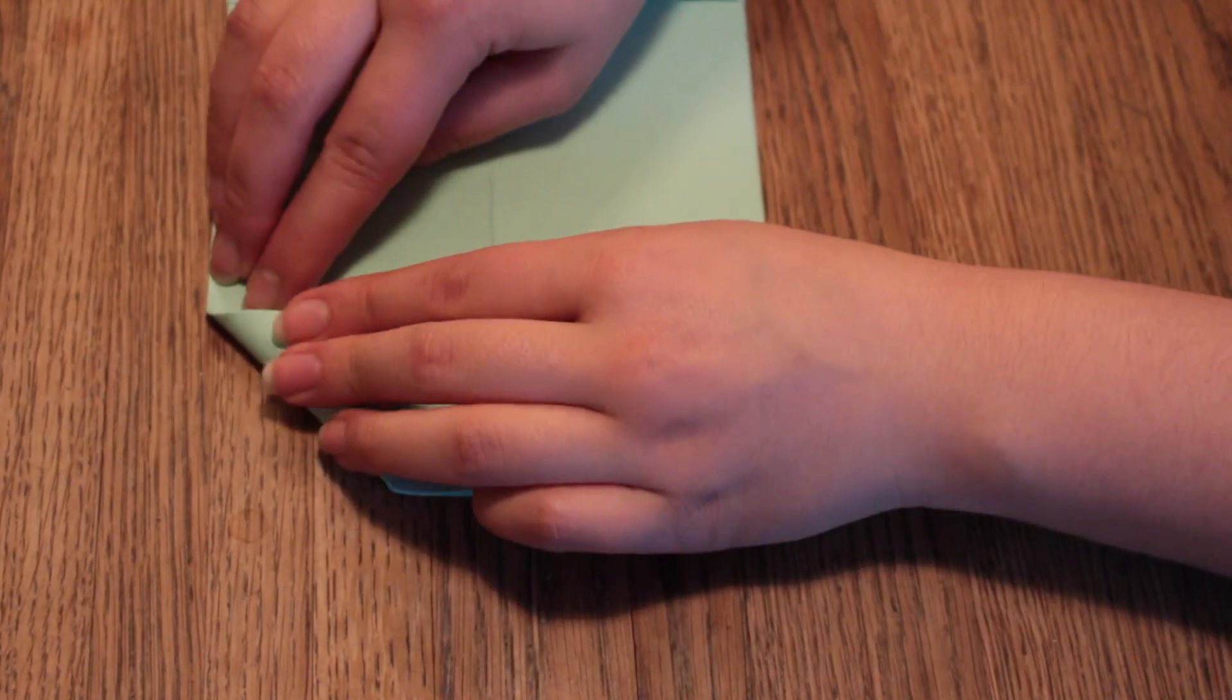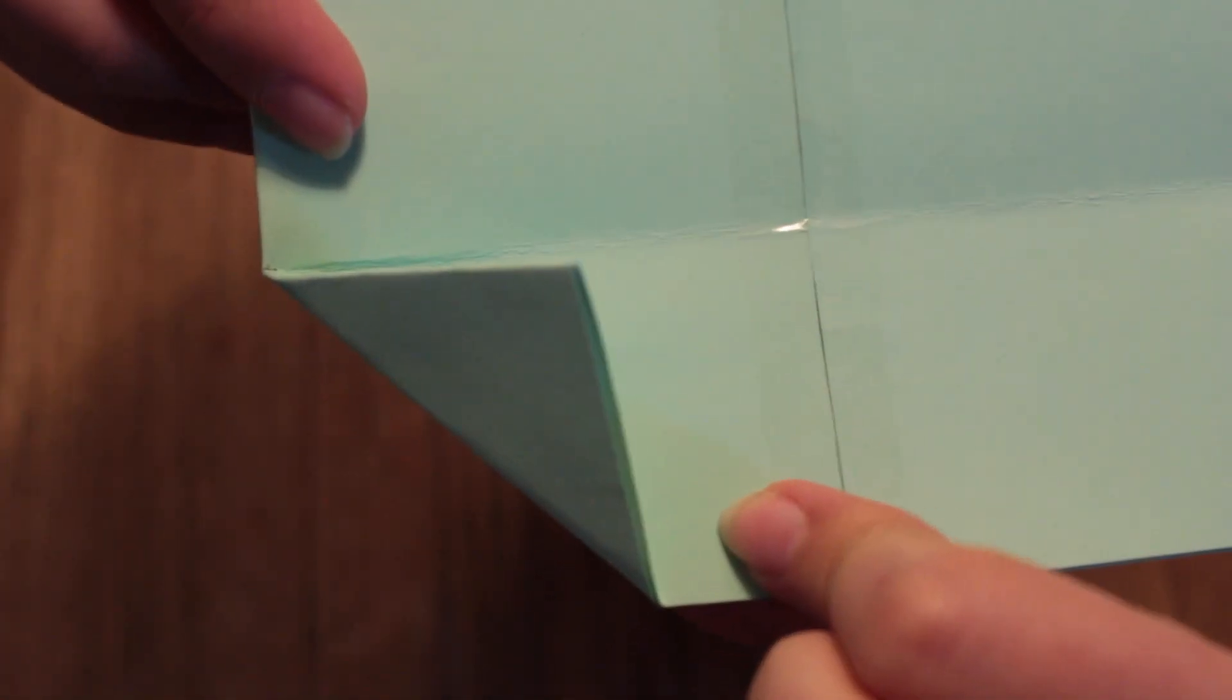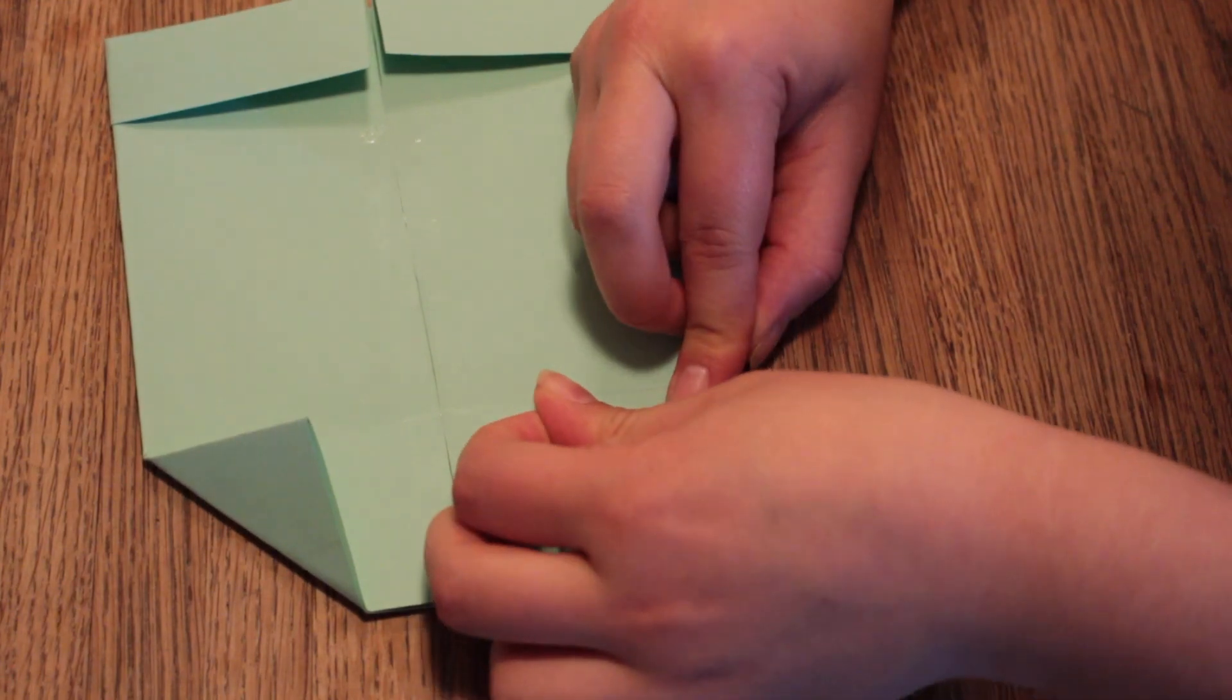Then take the edges of the bottom and then fold it right up to the score you just made. And don't forget the other edge.